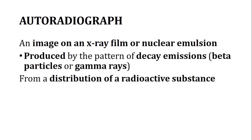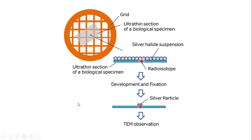The radioactive substance has been assimilated inside the sample and we are observing the decay pattern. For example, with an ultra-thin section we apply a silver halide suspension. The radioisotope is attached to the sample, and after development the silver particles appear dark and can be observed under transmission electron microscopy.